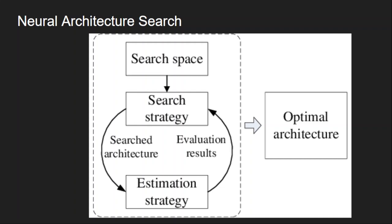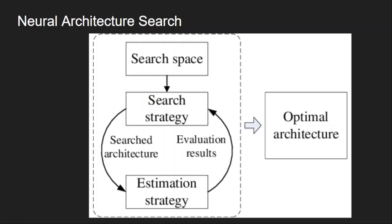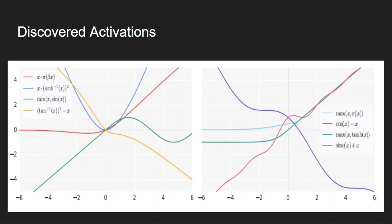They have also used this automated search for discovering activation functions. They define the search space and strategy, and it looks for different functions which are possible candidates for an activation function, evaluates them, and finally gives some promising results. They found many activation functions that showed promising performance — you can see the functions discovered by NAS, their equations, and the corresponding plots.